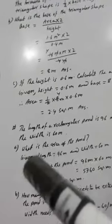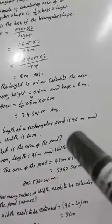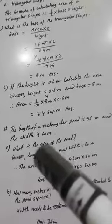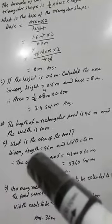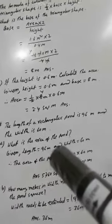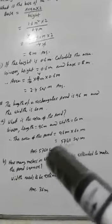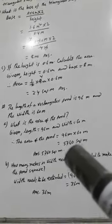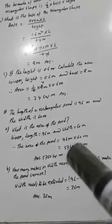Another problem: the length of a rectangular pond is 96 meters and the width is 60 meters. What is the area of the pond? Given length 96 meters and width 60 meters. Area equals length multiplied by breadth: 96 multiplied by 60.